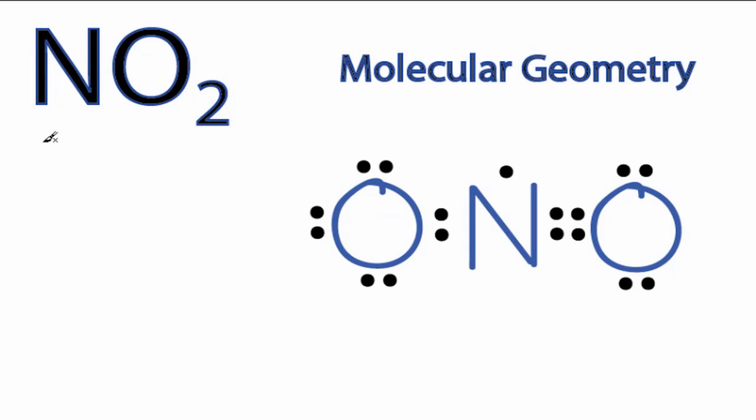To determine the molecular geometry for NO2, we'll go to the Lewis structure. You can see there are two oxygens on that nitrogen, and there's also a single electron on top of the nitrogen atom.